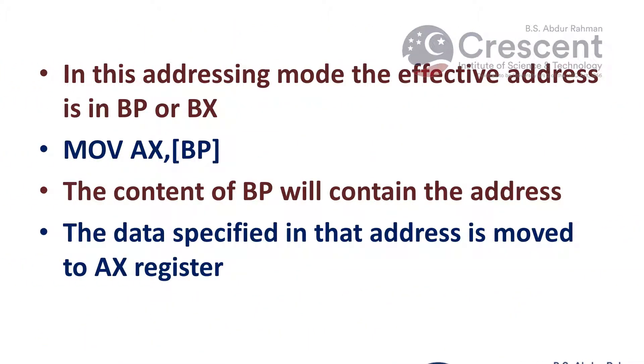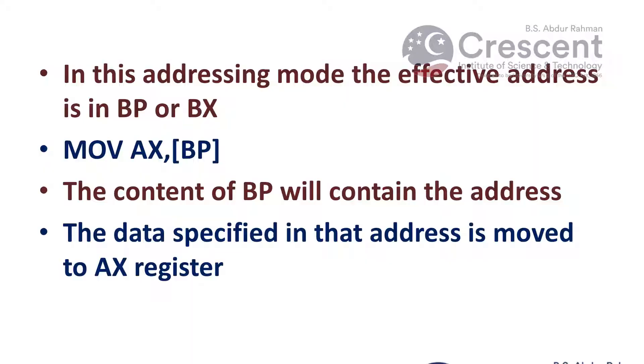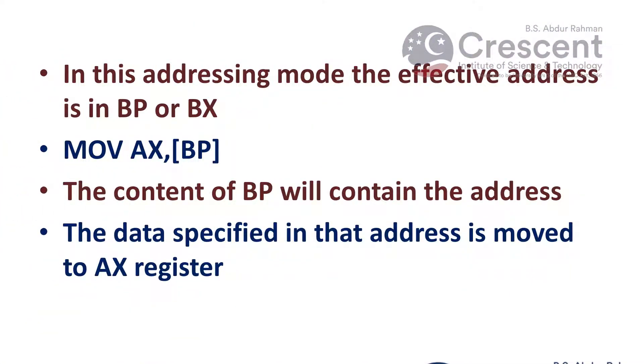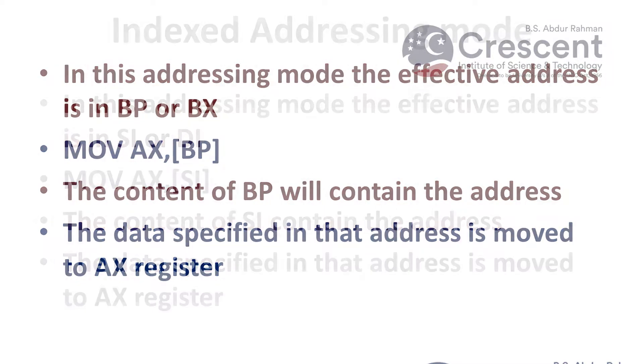The next type is based addressing mode. In this addressing mode, the effective address is either in the base register or base pointer register. For example, MOV AX, [BP] — BP represents the base pointer register. The content of the BP register contains the address, and the data specified at that address is moved to AX register.